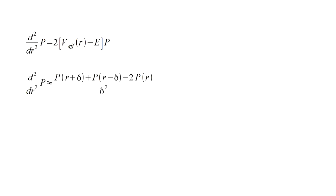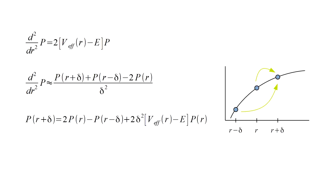For a small step-size delta, the curvature term can be approximated as shown. Putting this into the Hartree equation and rearranging, we get an expression that tells us how to calculate p at r plus delta, given p at r and r minus delta.